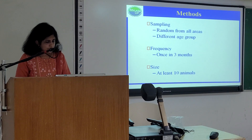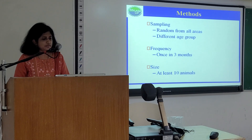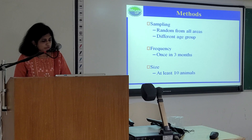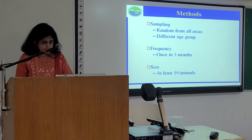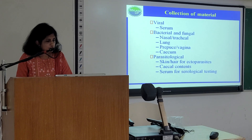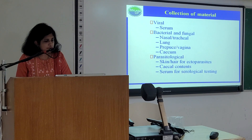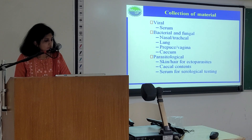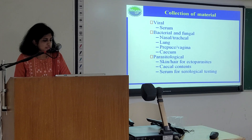Methods of sampling may be of two types: random sampling from all areas, and sampling from different age groups of animals, which should be done once every 3 months with at least 10 animals at a time. For collection of material: for viral samples, serum is collected; for bacterial and fungal samples, nasal, tracheal, lung, cecal and other specimens may be collected; for parasitological examination, skin or hair for ectoparasites, cecal contents, and serum for serological testing.